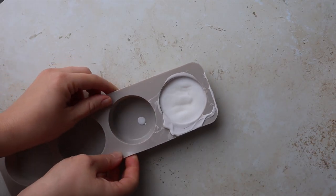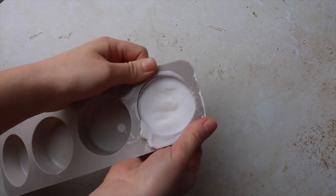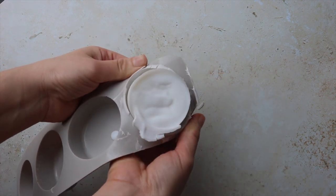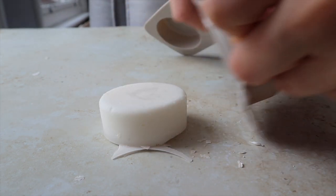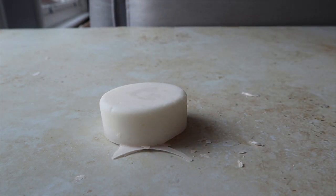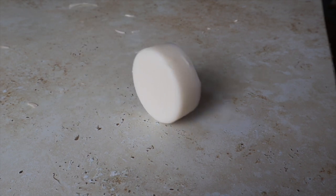After you unmold the soap you need to wait for about four to six weeks before you can use your soap. That is because any lye that we use in the soap must evaporate out so that the soap is actually mild and not drying to the skin.